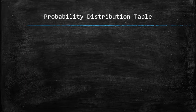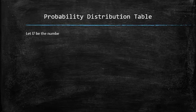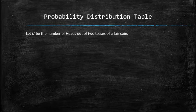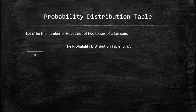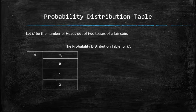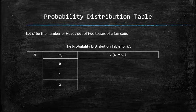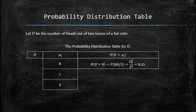Sometimes it takes more effort to create the probability distribution table. Consider the following example: let u be the number of heads out of two tosses of a fair coin. To construct the probability distribution table for u, we list all possible outcomes along with their probabilities. The probability that u equals 0 is the same as the probability of 0 heads among two tosses, which we compute using the formula from the previous section, and is equal to 0.25.